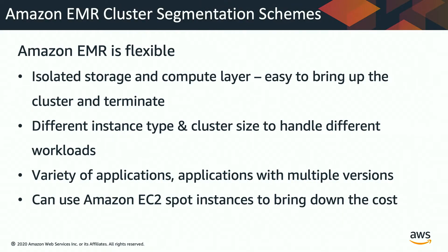EMR currently has more than 20 different applications, each with different versions, so there's a variety of applications in multiple versions to serve different workloads. You can also use Amazon EC2 Spot Instances to bring down your costs significantly. So how can you use this flexibility to create different segmentations in Amazon EMR when you migrate to it?